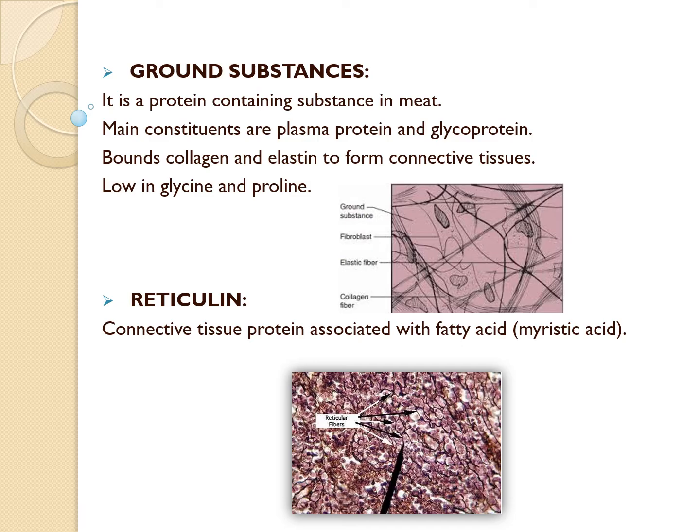The ground substances are an undifferentiated matrix of plasma proteins and glycoproteins in which the two fibrous molecules of collagen and elastin are bound. They are low in glycine and proline.